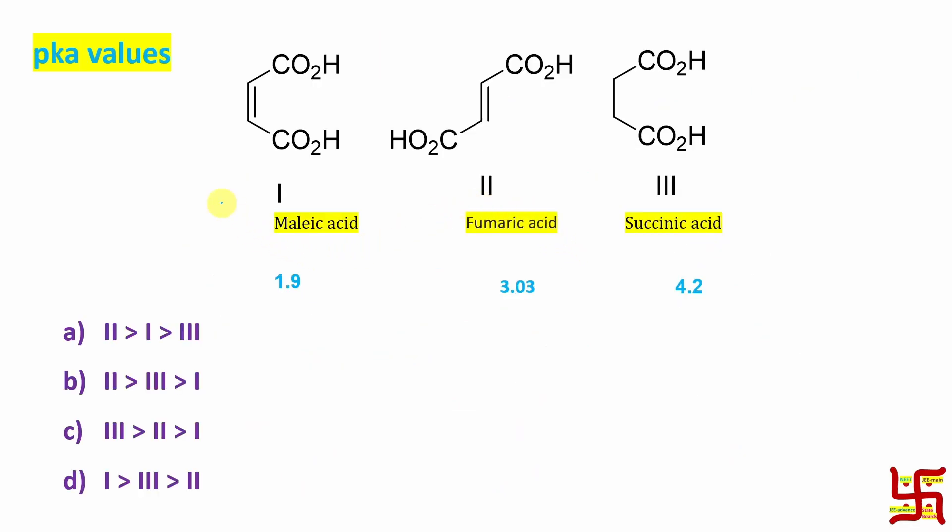And you can see the pKa values which is the experimental proof of this statement. That is first one has pKa 1.9, second one 3.03 and third one 4.2. So who is strongly acidic option A or maleic acid and this option C means third one or succinic acid is least acidic.